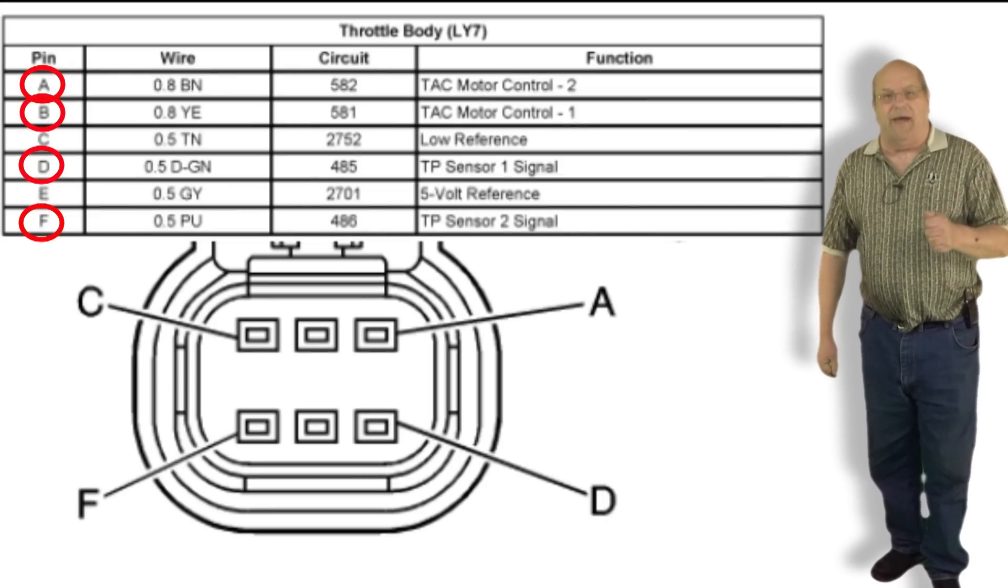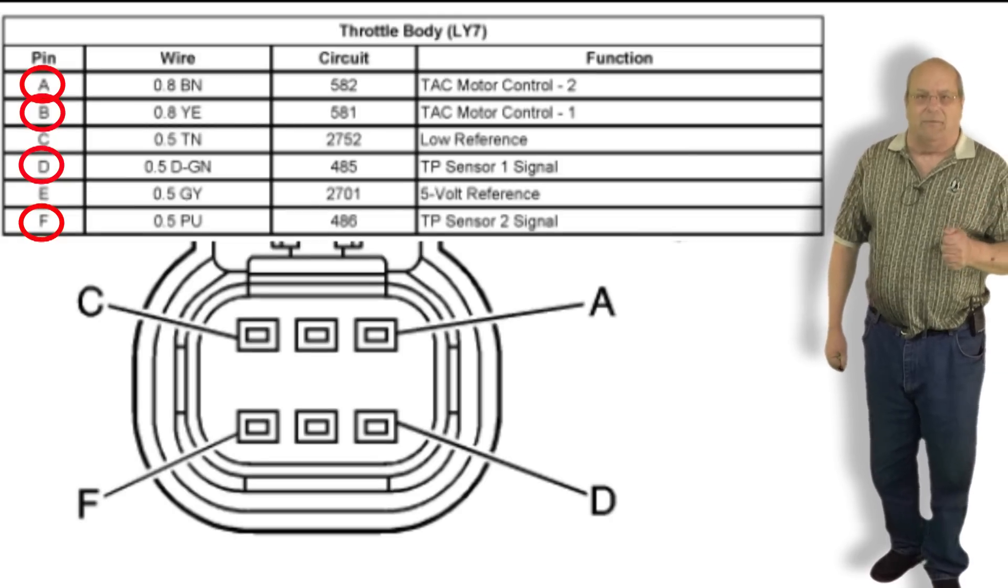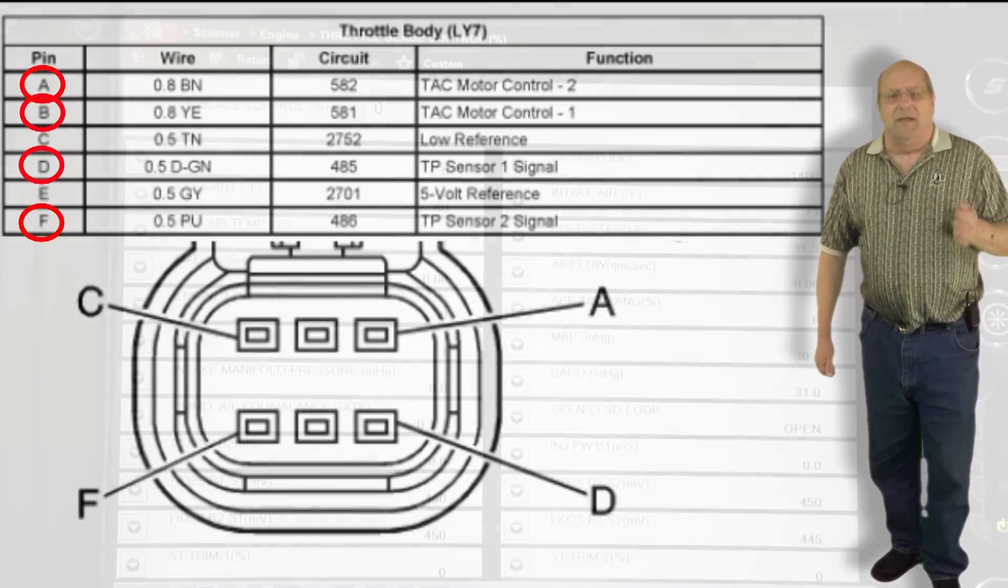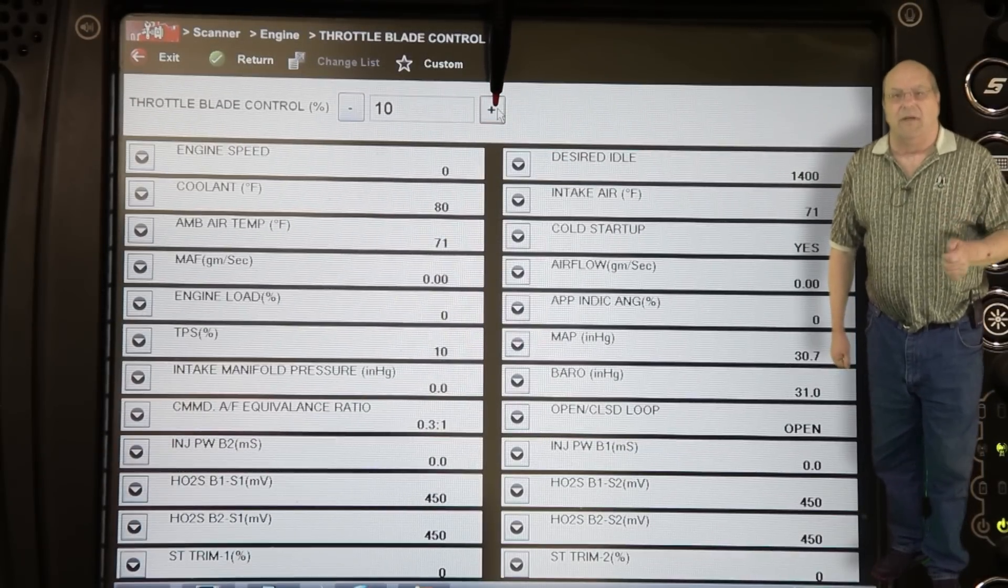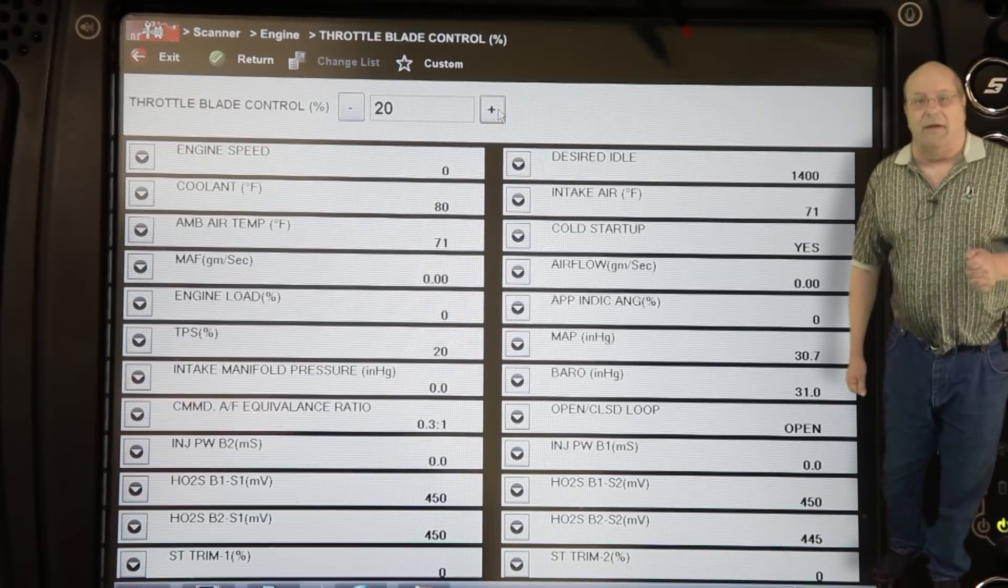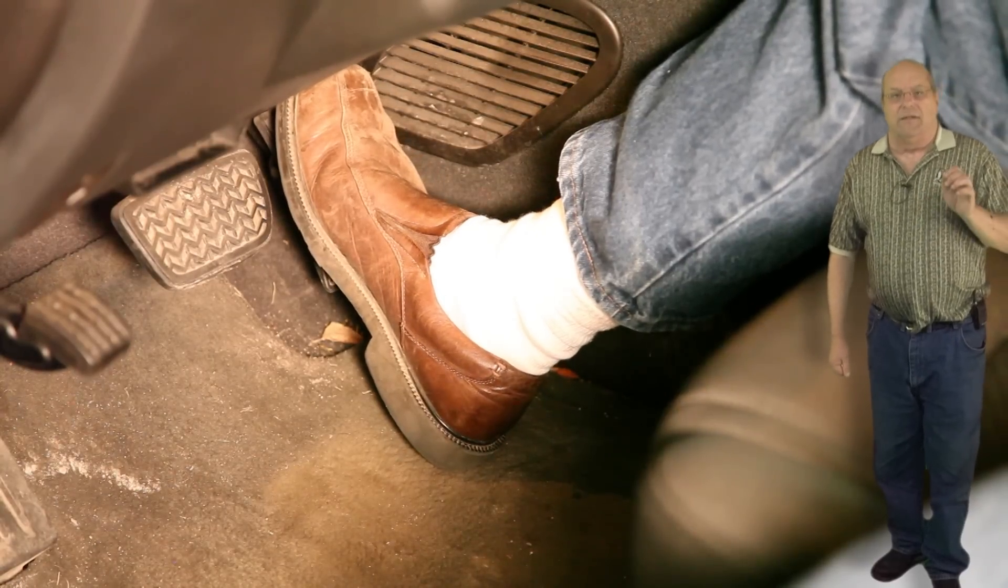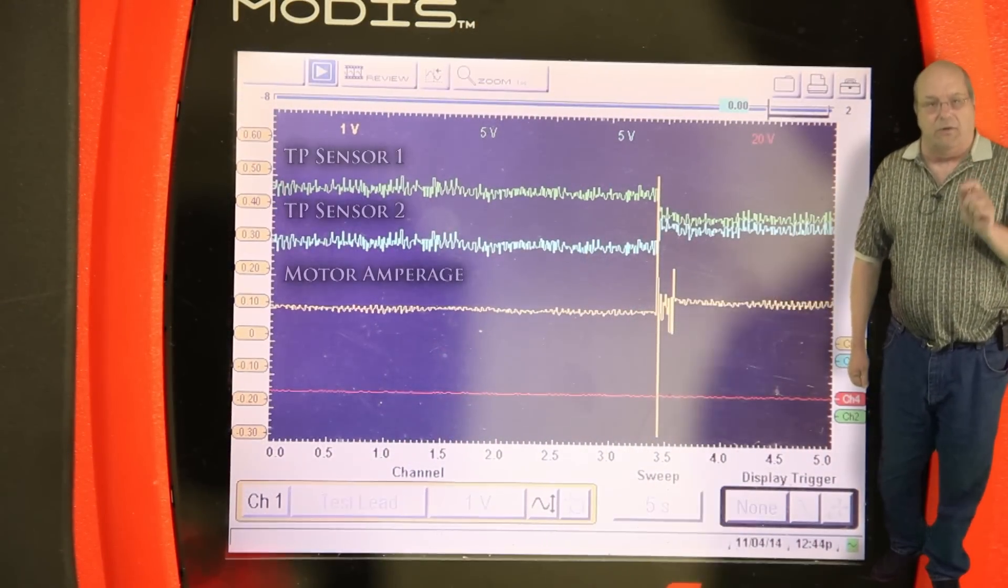We will observe the lab scope while activating the throttle body with the scan tool. The scan tool allows us to advance the throttle plate in 10 degree increments. If you do not have access to a scan tool, have someone step on the accelerator in increments with the ignition key on. This is a new throttle body and this is what a good pattern should look like.